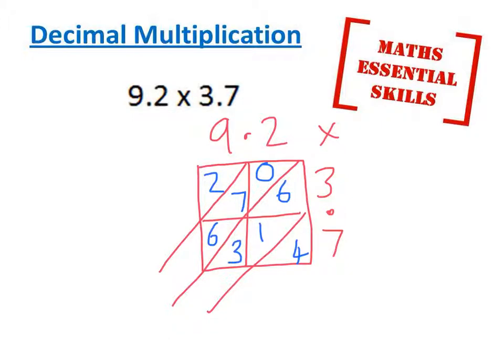I'll add up each diagonal column. 4, 10, 14 and 3.